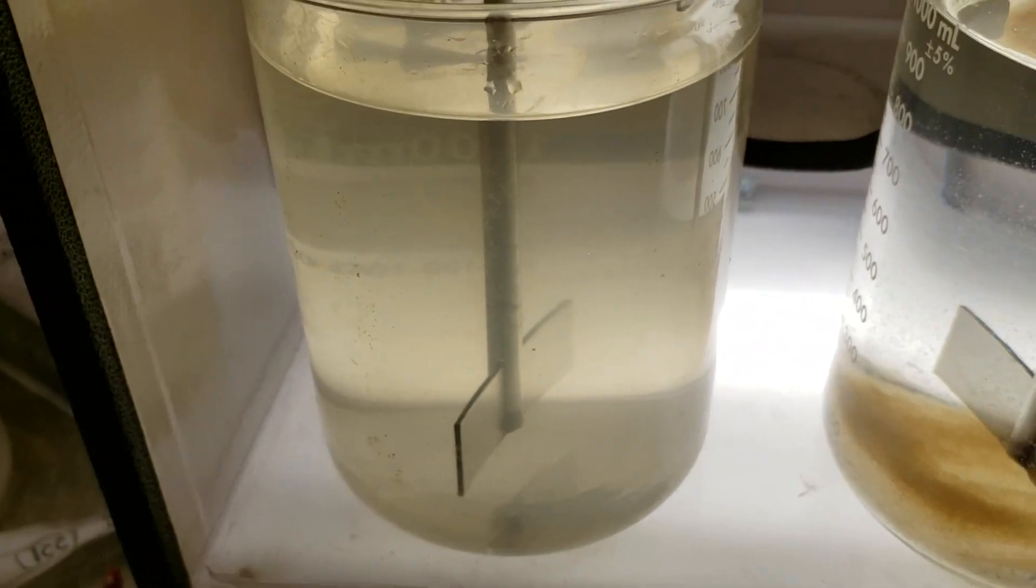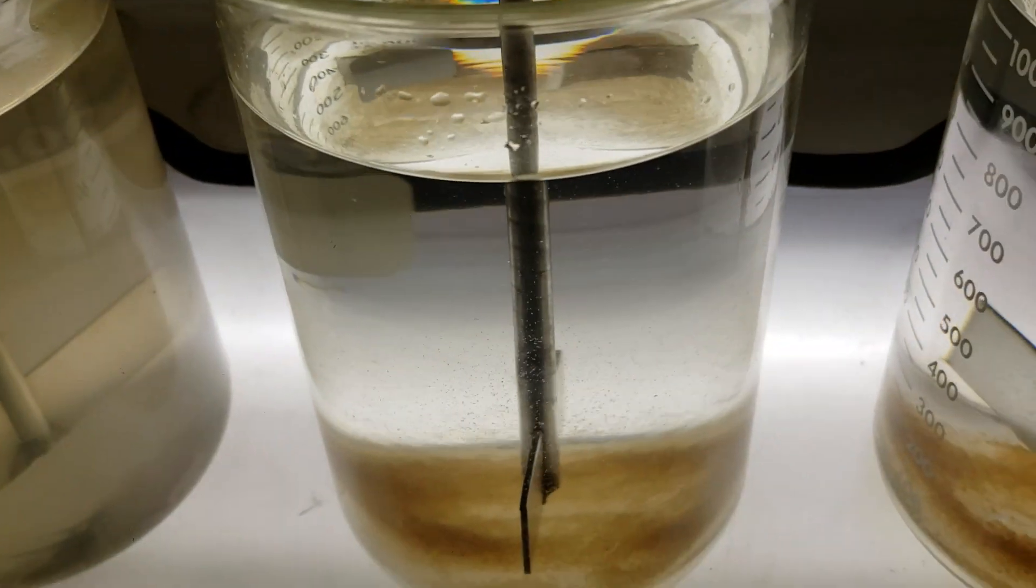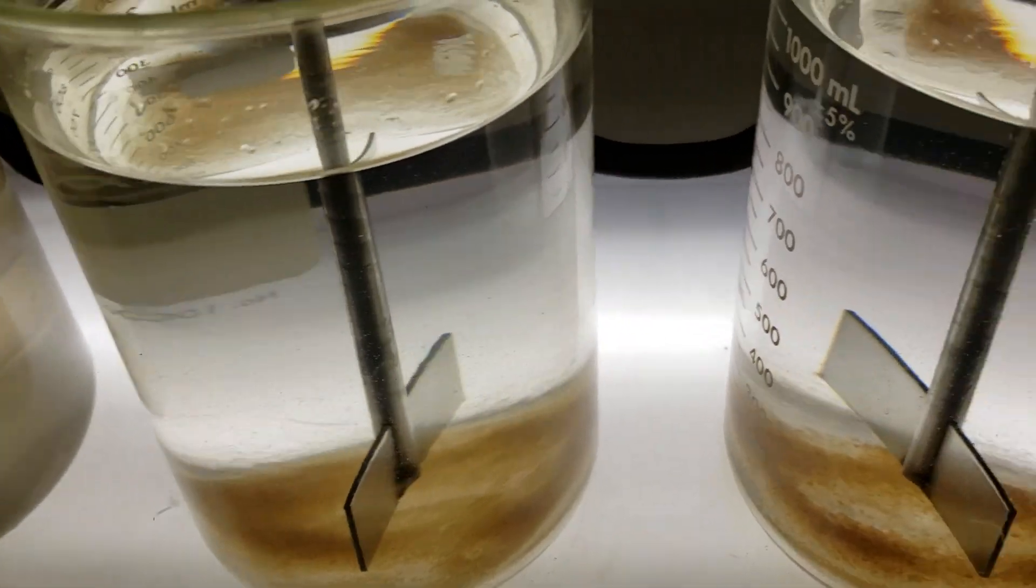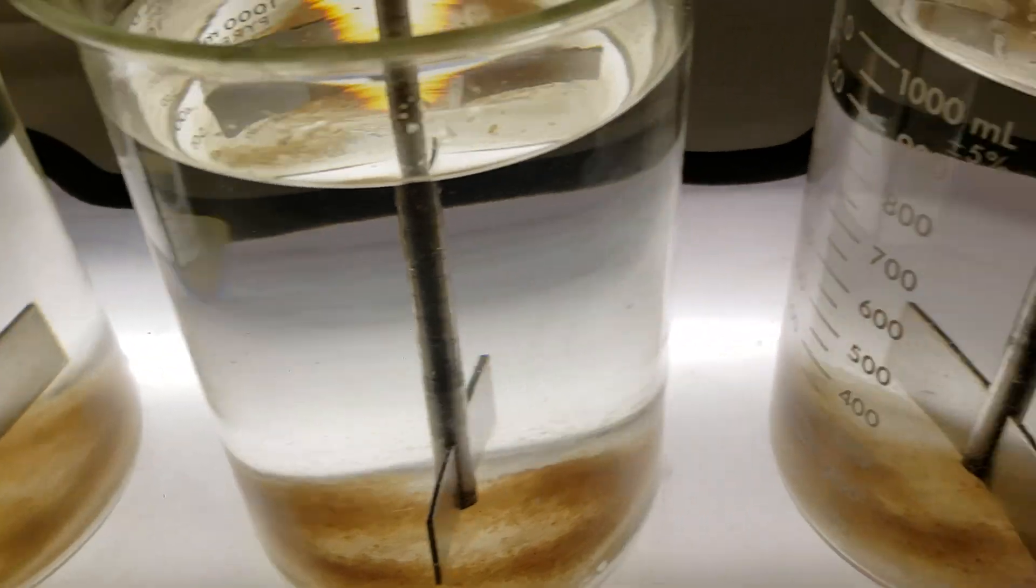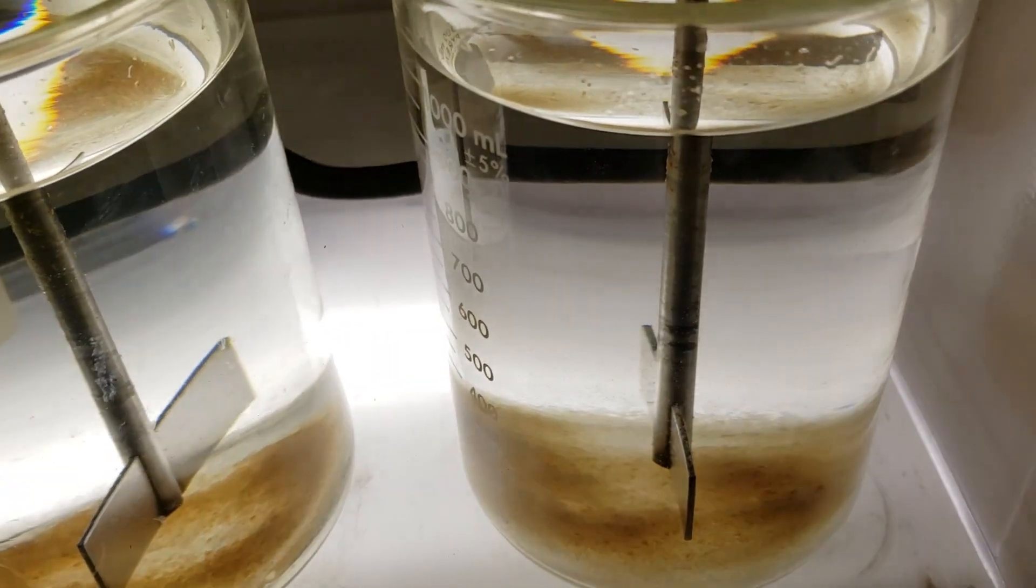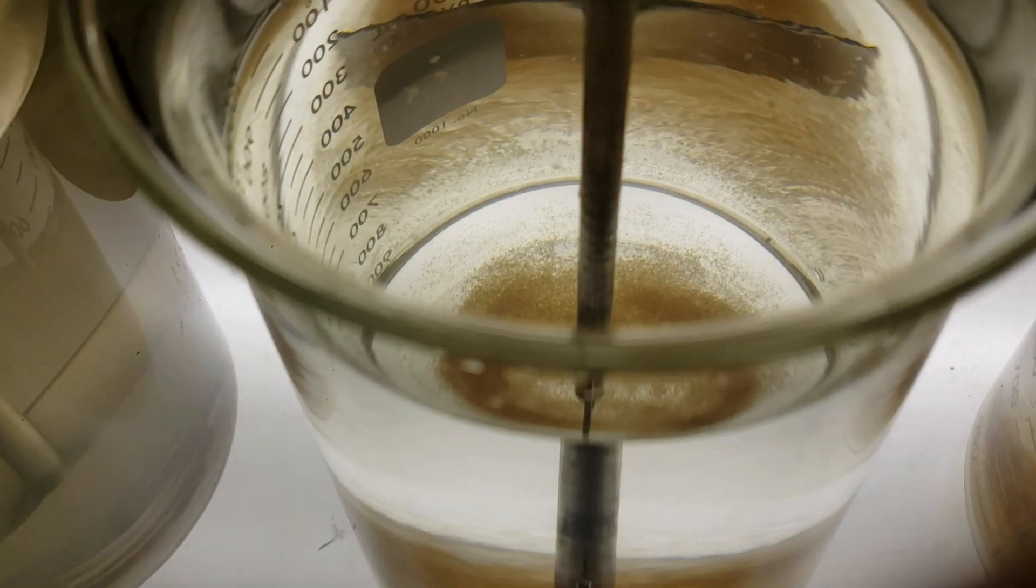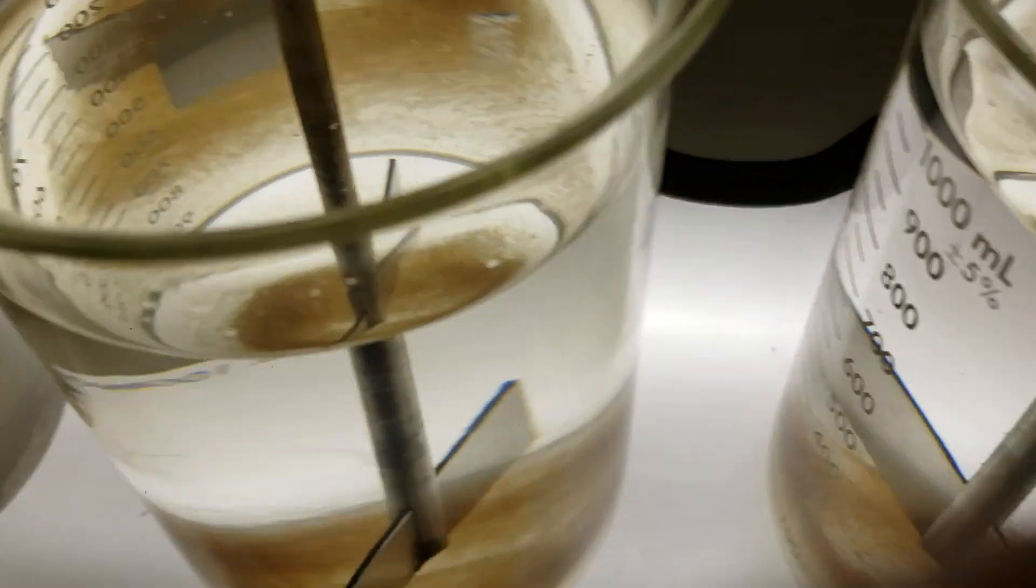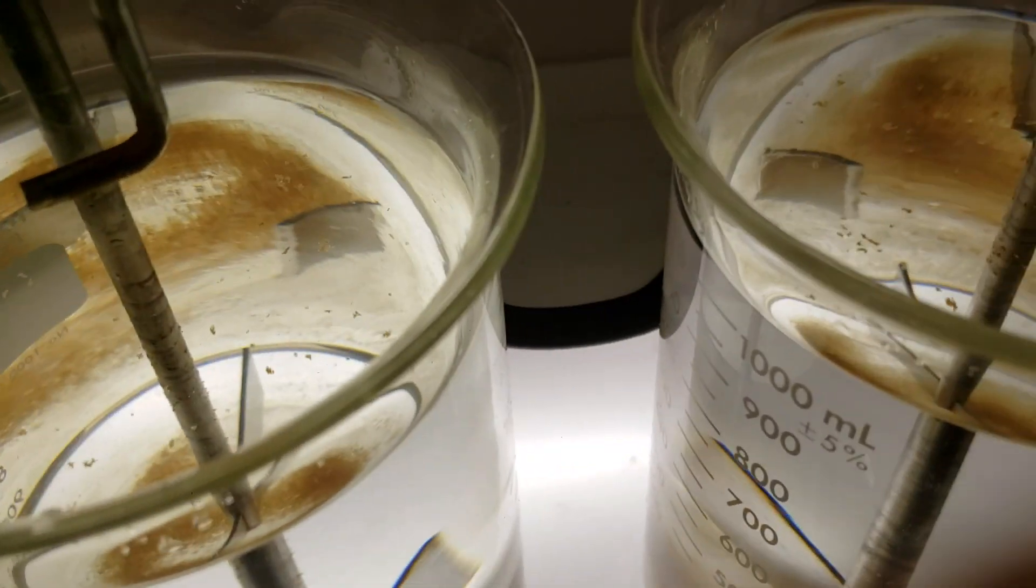All right, so that's untreated raw water, 5 ppm, 10, and 15 of the coagulant. We've got a few little surface floaties, maybe a few more floaties on the 10 and 15.